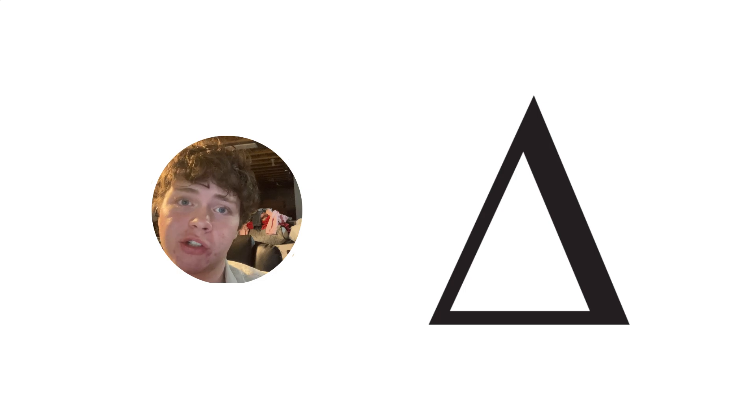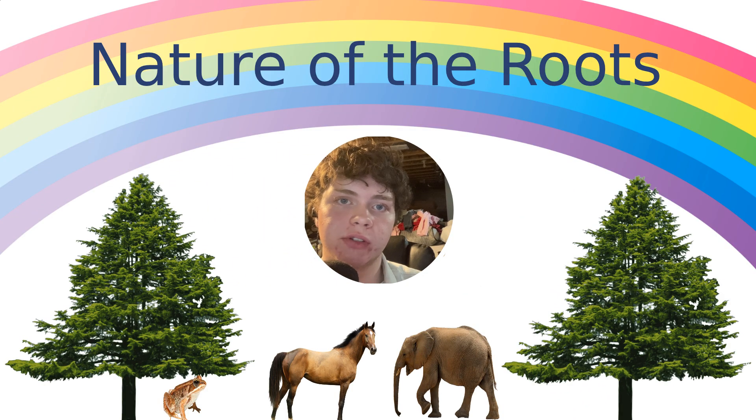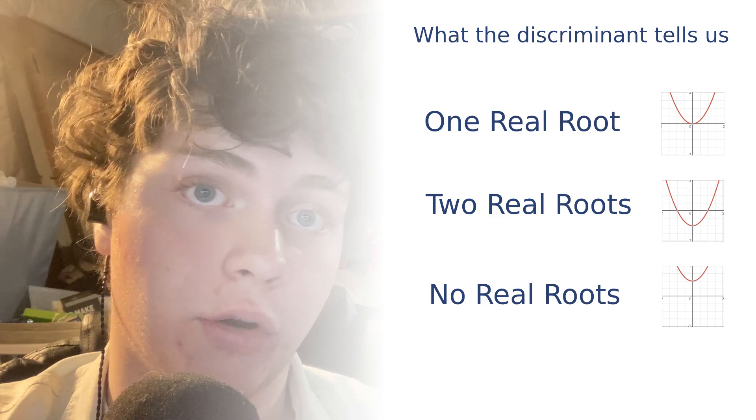The discriminant is notated by the Greek letter delta, which is pretty much just a triangle. At its core, the discriminant tells us the nature of the roots. That means the discriminant tells us whether or not a quadratic has either 1, 2, or no real roots.